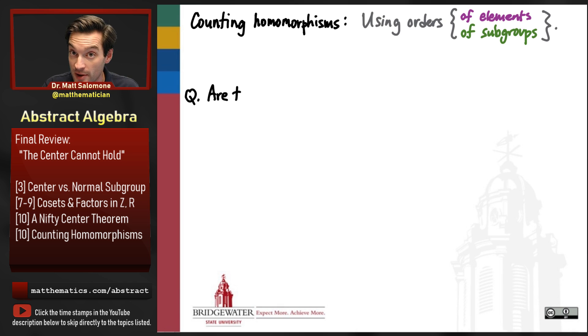So here's the question that I want to ask and then explore in this video. Are there in fact any non-trivial homomorphisms from the dihedral group of the hexagon to the alternating group on four symbols?